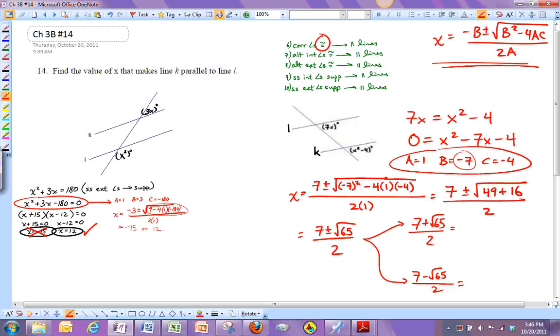And so if I plug these into my calculator, which I've got right here, I'll do that. 7 plus root 65 is 15.0622, and then I divide by 2. And I get 7.531.